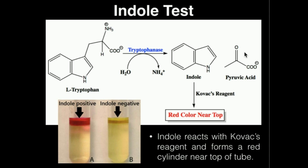If we add a reagent called Kovacs reagent, it will react with this indole product but not tryptophan. It will only react with indole and will turn a red color, which will appear near the top of the tube. Here we have an indole-positive result, which is indicative that the enzyme tryptophanase is expressed by the bacteria.